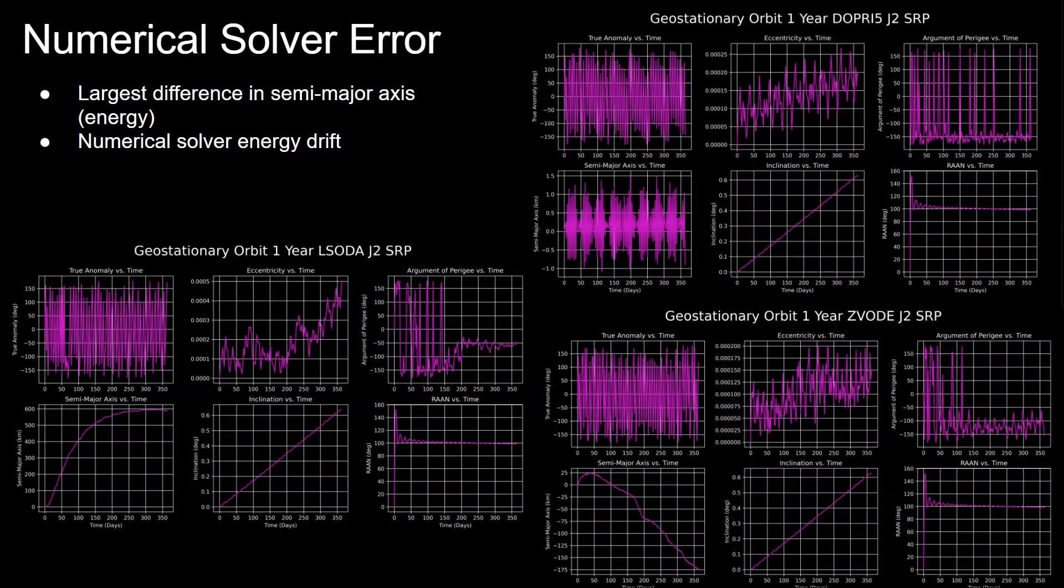These three plots show the results of three different solvers integrating the same equations of motion, which include Earth gravity, lunar gravity, J2, and solar radiation pressure. They mostly all agree on the elements, except for the semi-major axis, which is related to the energy of the orbit. As the semi-major axis increases, the energy of the orbit increases.